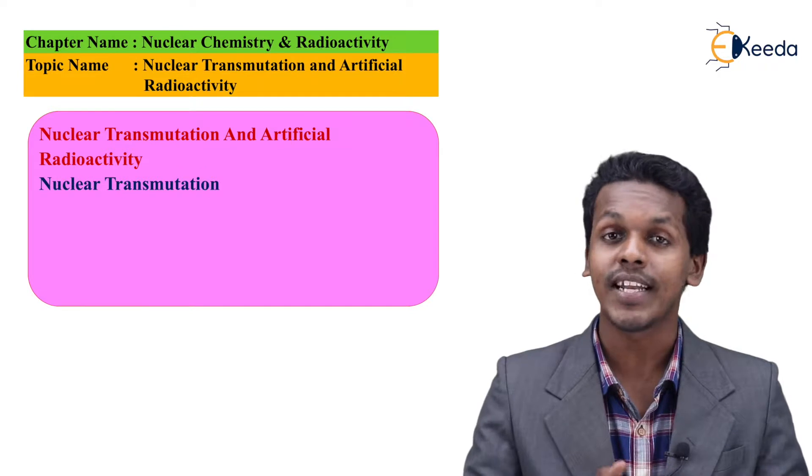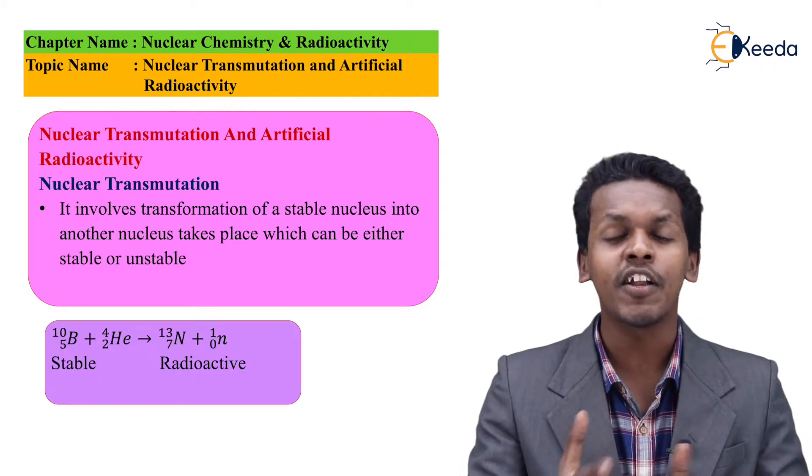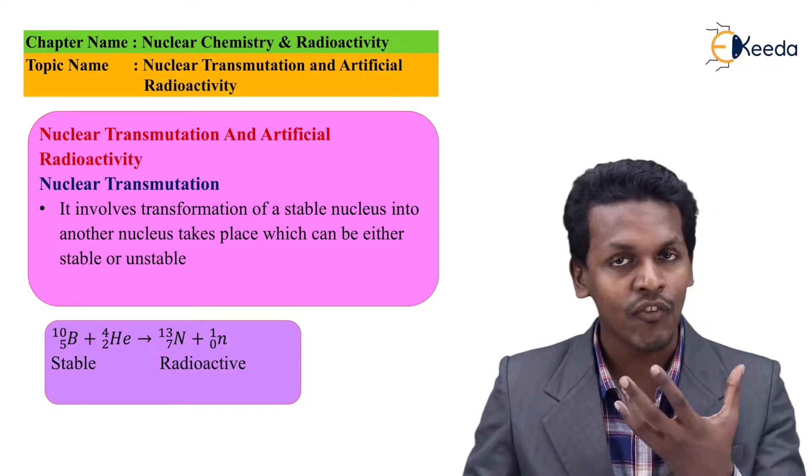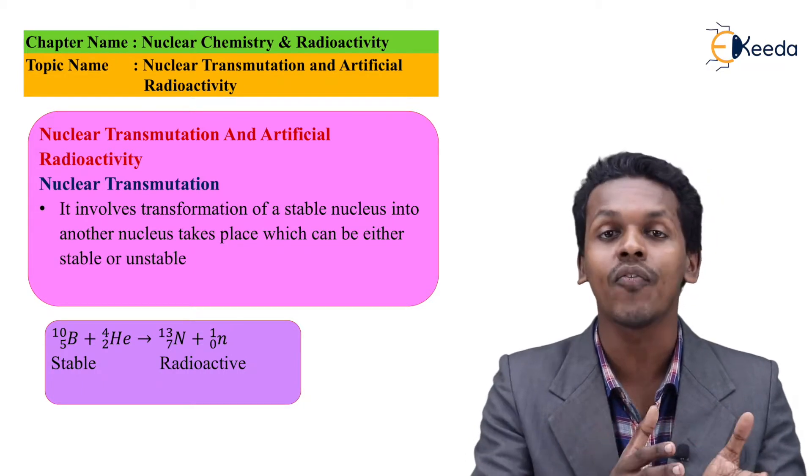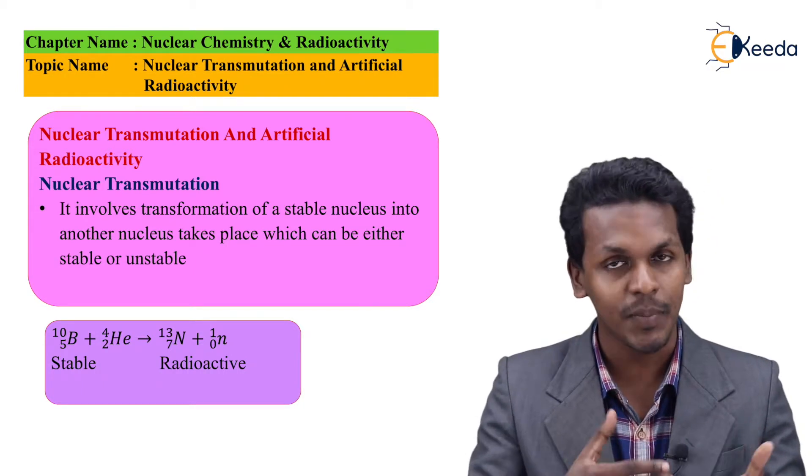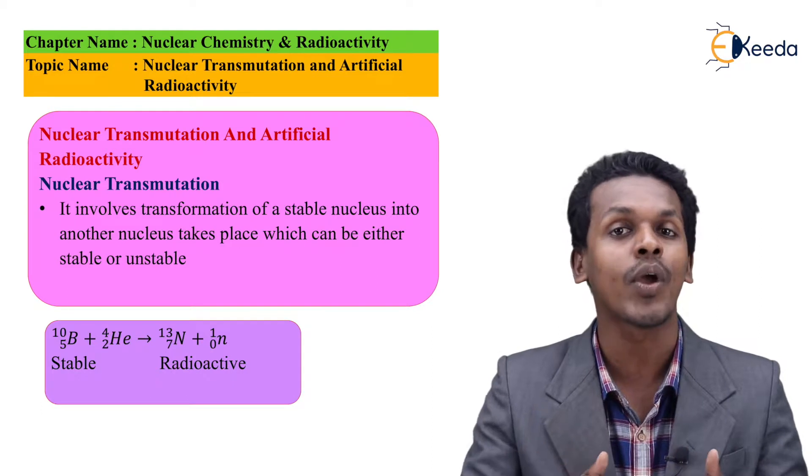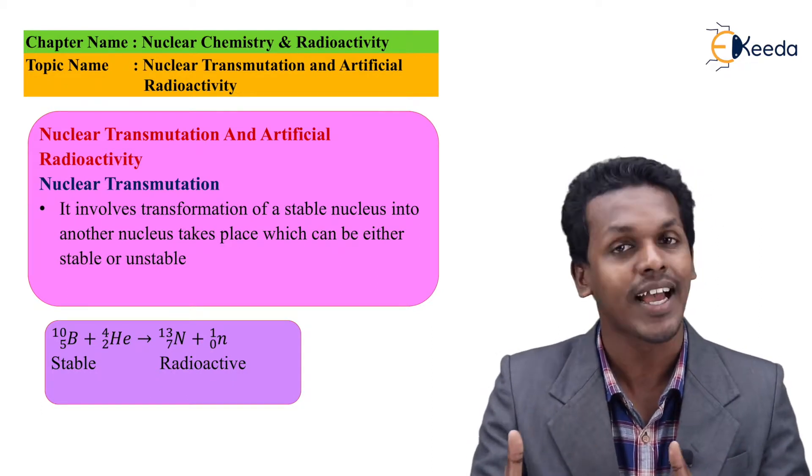Let me talk about nuclear transmutation first. Nuclear transmutation is a nuclear reaction in which a stable nucleus is converted to an unstable radioisotope.